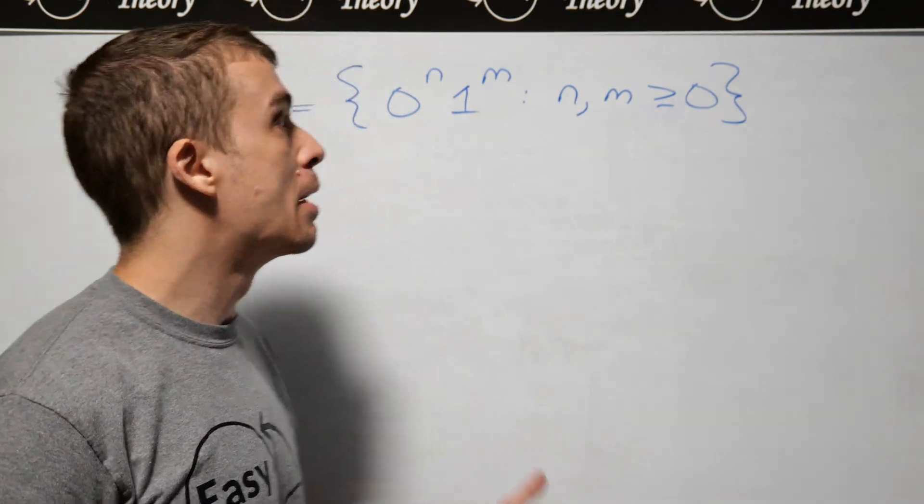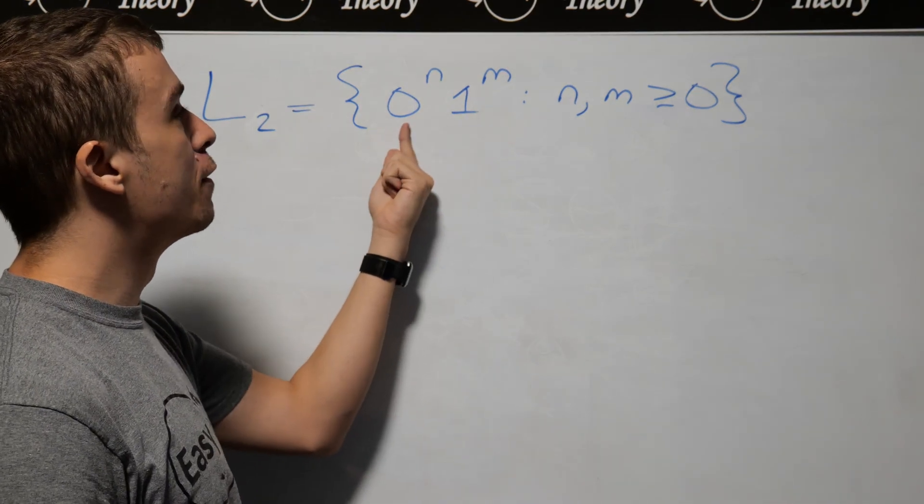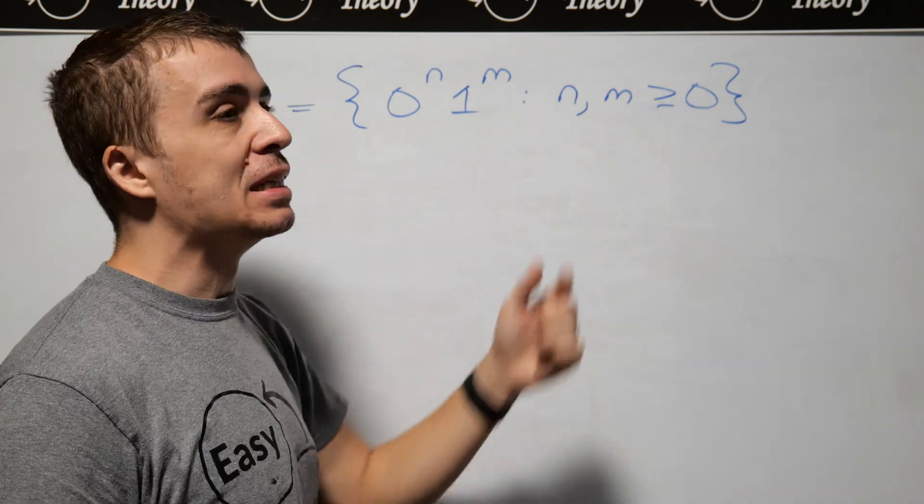Okay, let's make a context-free grammar for this language L2, which is the set of strings of the form 0 to the n, 1 to the m, where n and m are at least 0.